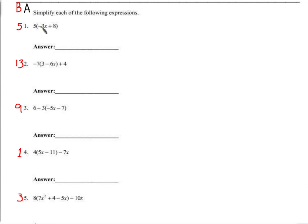We start pretty basic — we're just going to distribute this five. Just remember that when we distribute a positive to a negative, we get a negative, so we should get negative 15x plus 40.